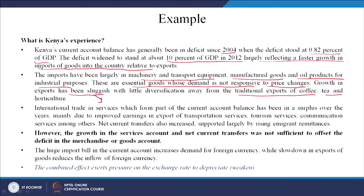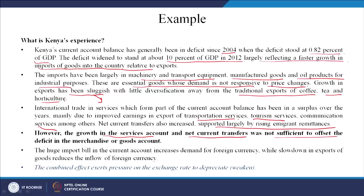There could be several reasons why exports did not grow - international trade with little diversification away from the traditional exports of coffee, tea, and horticulture. International trade in services, which form part of the current account balance, has been in a surplus over the years, mainly due to improved earnings in export of transportation services, tourism, and communication. Net current transfers also increased, supported largely by rising emigrant remittances. However, the growth in the services account and net current transfers was not sufficient to offset the deficit in the merchandise or goods account.